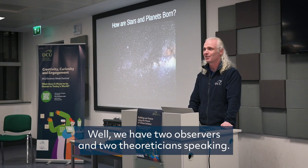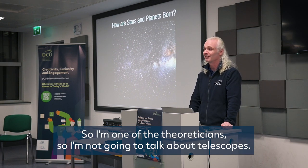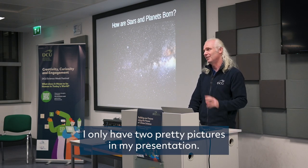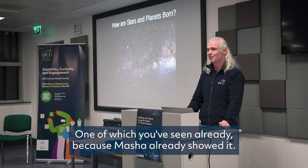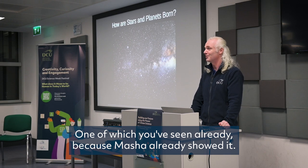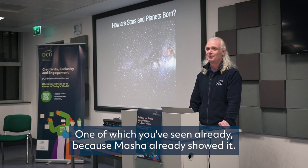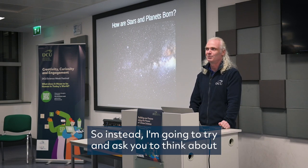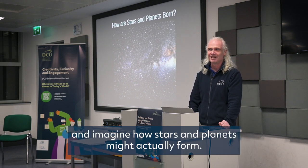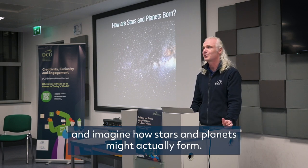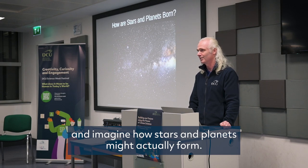We have two observers and two theoreticians speaking. I'm one of the theoreticians, so I'm not going to talk about telescopes — I only have two pretty pictures in my presentation. One of which you've seen already because Masha already showed it. So instead I'm going to try and ask you to think about and imagine how stars and planets might actually form.